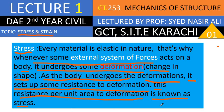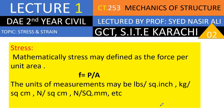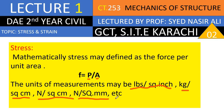Mathematically, stress may be defined as the force per unit area, that is P divided by A, where P is the force and A is the total area. The units of measurement may be pounds per square inch, kilogram per centimeter square, Newton per square centimeter, or Newton per square millimeter, etc.